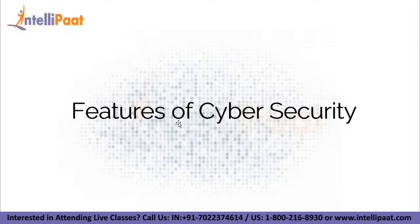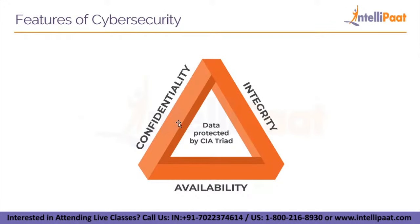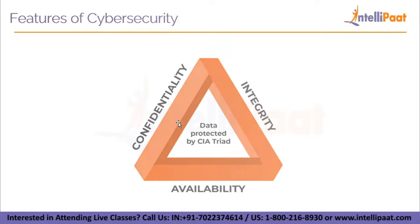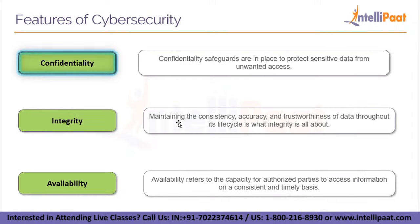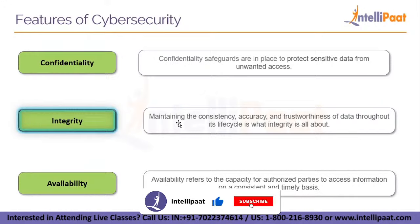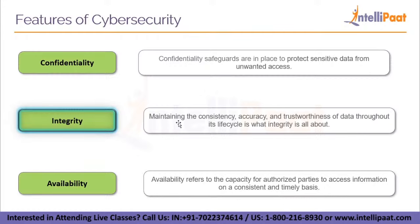Now let us move on to the features of cyber security. The core underpinning of the information security domain is the CIA triad. These features are confidentiality, integrity and availability. Every security control and every security vulnerability can be viewed in light of one or more of these concepts. For a security program to be considered comprehensive and complete, it must adequately address the entire CIA triad. Confidentiality safeguards are in place to protect sensitive data from unwanted access. Integrity is about maintaining the consistency, accuracy and trustworthiness of data throughout its lifecycle. Availability refers to the capacity for authorized parties to access information on a consistent and timely basis.